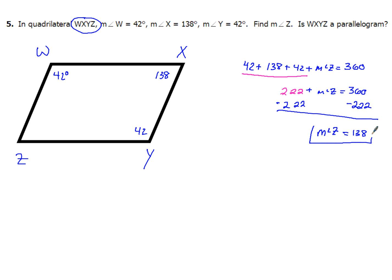So that was the first thing I had to do — figure out that the measure of angle Z is 138. Once I figure that out, I'm going to put 138 right there in my picture. Now I've got to use my observational skills: I've got 138 right here and 138 right there, so those opposite angles are the same.